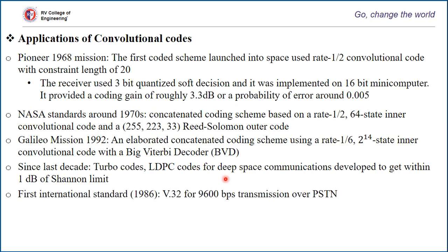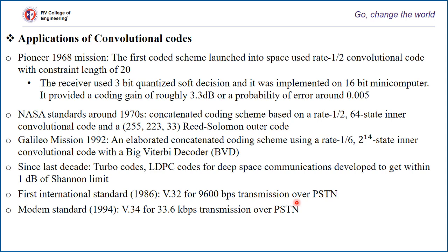Another area where error control coding and convolution codes made a major impact was encoding for modems. Around the mid-1980s, Ungerboeck showed how to combine coding and modulation, giving rise to trellis-coded modulation — a concatenated coding technique. These codes were heavily used to design coding schemes for data transmission over the public switched telephone network.